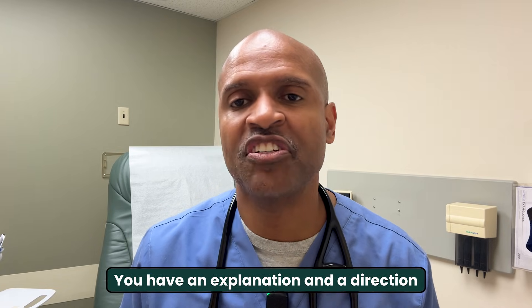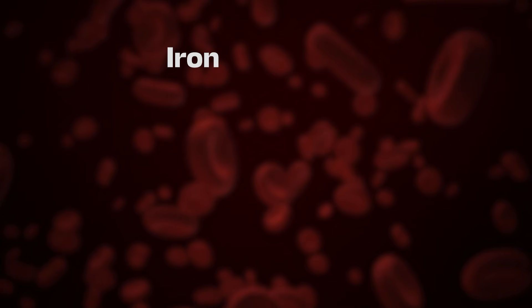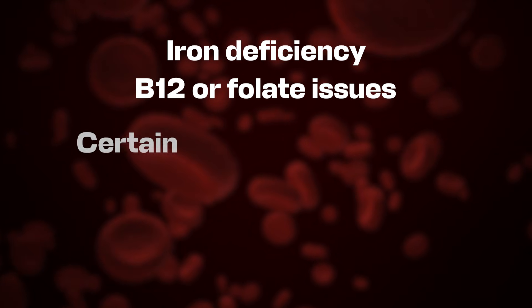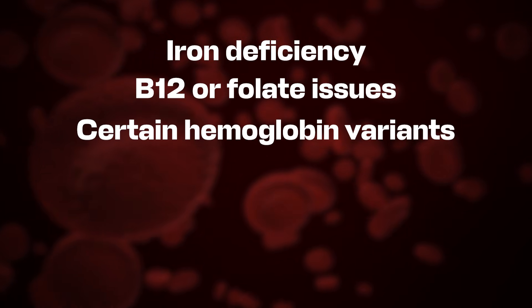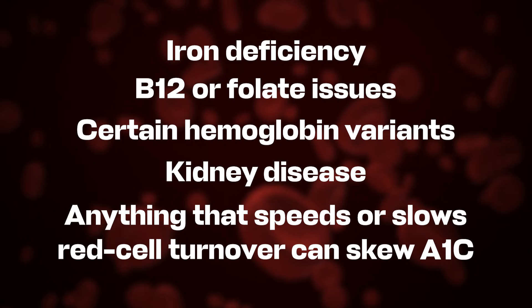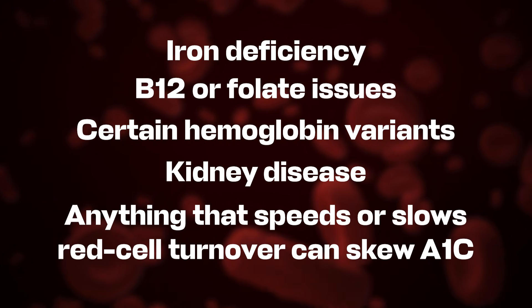Either way, you have an explanation and a direction. A few guardrails so we stay honest: not every mismatch is a lifespan story. Iron deficiency, B12 or folate issues, certain hemoglobin variants, kidney disease, or anything that speeds or slows red cell turnover can skew A1C. If your numbers don't fit the pattern, that's a clinical conversation, not a YouTube diagnosis.